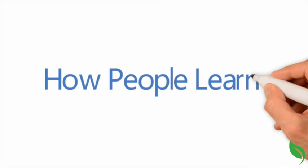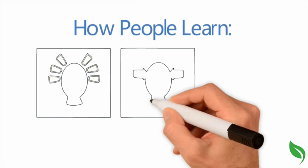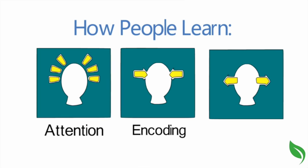What this means is that learning depends on three critical processes: attention, encoding, and retrieval.